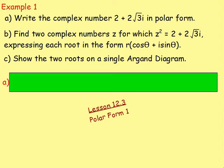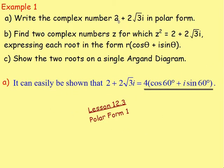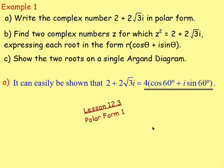For part A, this is something we have done multiple times before. This lesson is mainly on looking at the roots, so I'm just going to give you the answer to part A. If you want to see where it comes from, look back to polar form 1, lesson 12.3. Writing 2 + 2√3i in polar form gives you 4(cos60 + i·sin60).